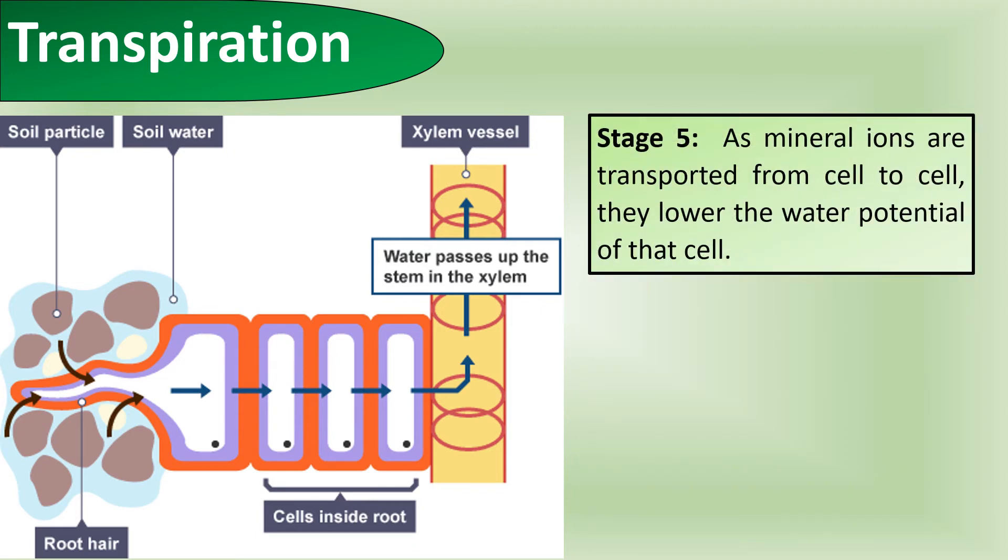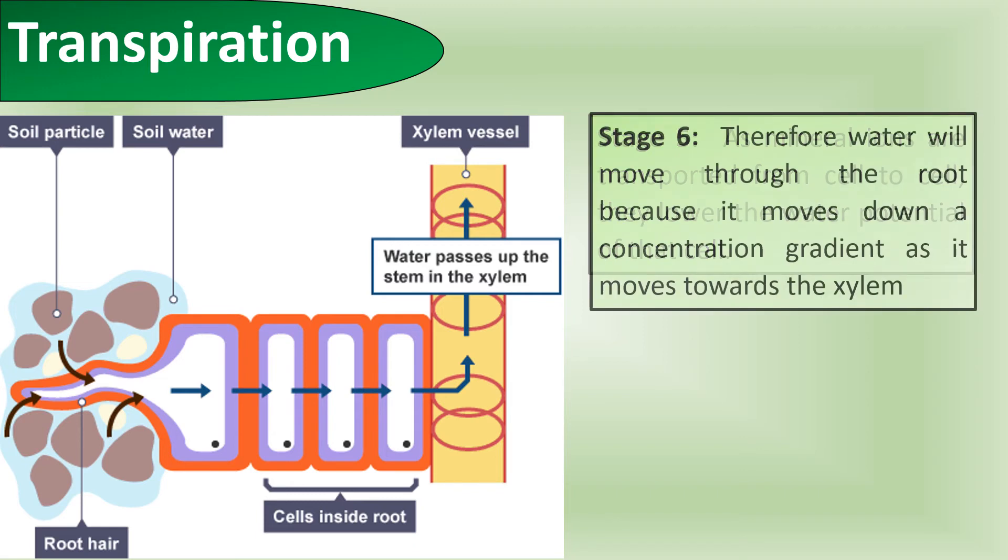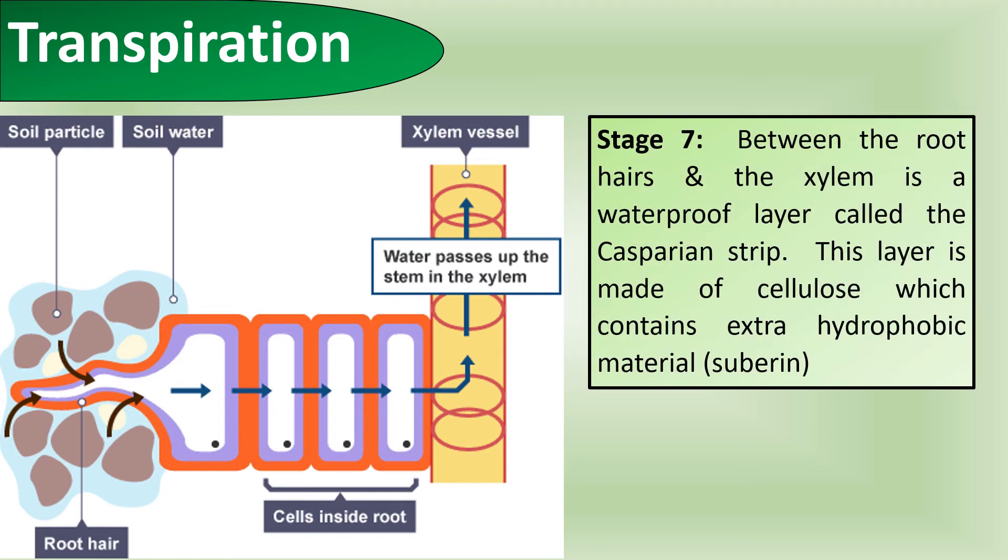As mineral ions are transported from cell to cell, they lower the water potential. Therefore water will move through the root because it moves down the concentration gradient as it moves towards the xylem. Between the root hairs and the xylem is a waterproof layer called the Casparian strip. This layer is made of cellulose which contains extra hydrophobic material called suberin.